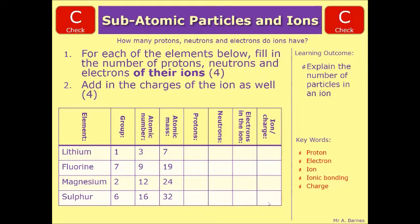So we'll start off with what should be a revision of just the normal periodic table calculations, and that is the number of protons. The proton number is the same as the atomic number. So we have 3, 9, 12 and 16. Neutrons, you should know, is atomic mass take away atomic number. So 7 minus 3 is 4. 19 take away 9 is 10. 24 minus 12 is 12. 32 minus 16 is 16.